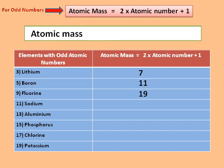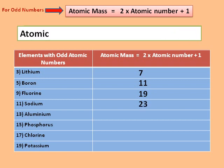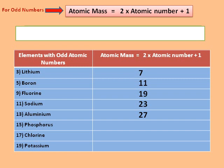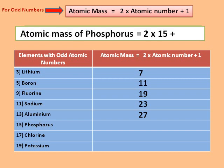Atomic mass of sodium is equal to 2 × 11 + 1 = 23. Atomic mass of aluminium is equal to 2 × 13 + 1 = 27. Atomic mass of phosphorus is equal to 2 × 15 + 1 = 21.